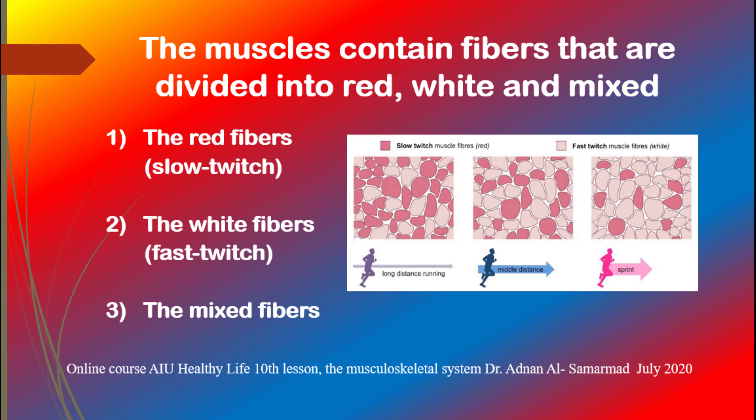The red fibers, also called slow twitch — with 80% slow twitch fibers — occur in 10% of people. They have a lot of myoglobin, which simplifies the transport of oxygen into the cells. They gain aerobic energy and are suitable for endurance sports.